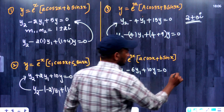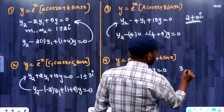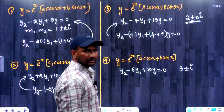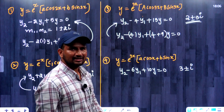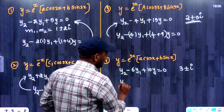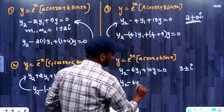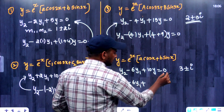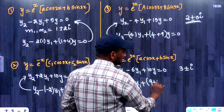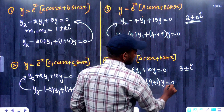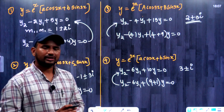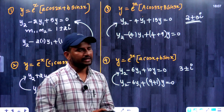The roots in this case are 3 plus or minus iota. Adding them, the imaginary parts cancel, giving 3 plus 3 equals 6. So y2 minus 6y1 plus (real part squared plus imaginary part squared) y equals 0 — real part squared is 9, imaginary part squared is 1 — that is y2 minus 6y1 plus 10y equals 0. This matches our answer.